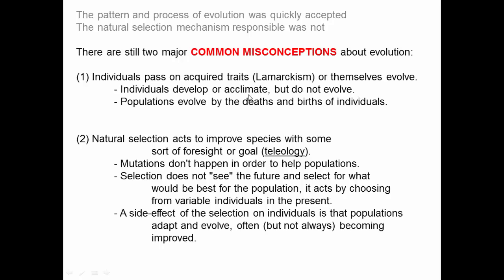That's a misconception. Individuals develop or acclimate — those are the technical terms — but individuals do not evolve. Evolving is what populations do. When you get a tan, you are acclimating, not evolving. Populations evolve through the deaths and births of individuals — they don't all evolve at once in concert. How does a population evolve to be darker? It's not all individuals getting darker together; it's that there's variation, some darker, some lighter, the darker ones do better, and the next generation is a little darker.